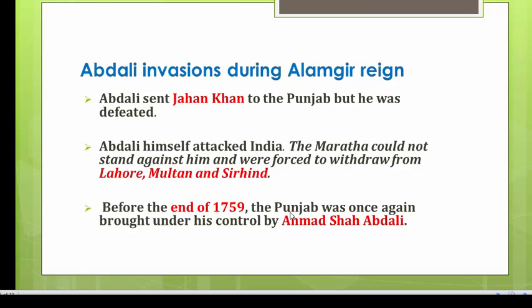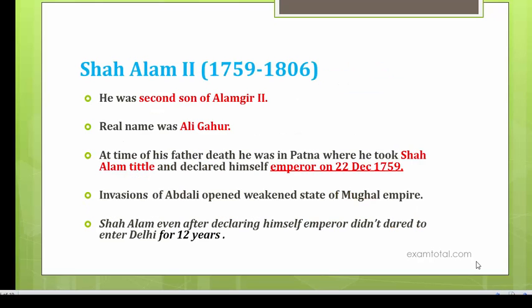As Maratha power and influence was increasing, they were not able to stand against Abdali's forces and were forced to withdraw from Lahore, Multan, and Sarhind which they had captured. As a result, by the end of 1759 Punjab was once again brought under the control of Ahmad Shah Abdali. Alamgir II was murdered by his own wazir, and the next Mughal successor was Shah Alam II.